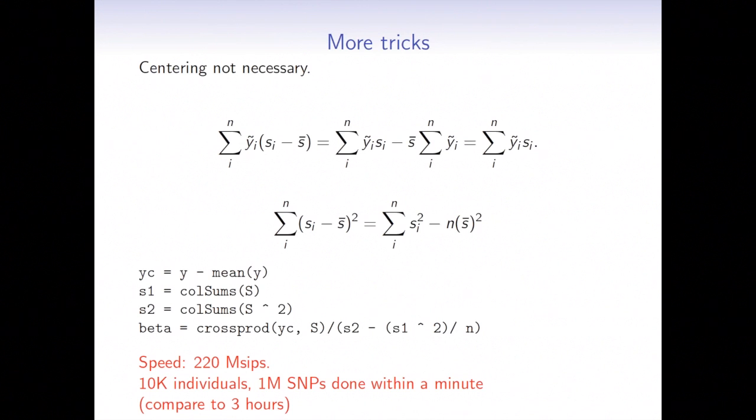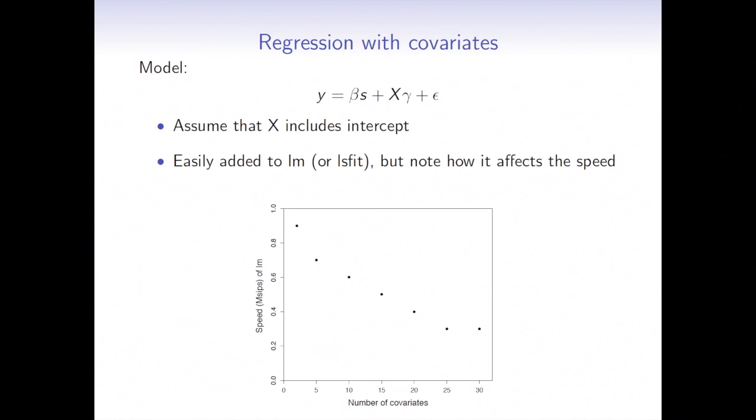And the speed was 220 mega-sips. And now that means that for 10,000 individuals, 1 million of SNPs, I would need only a minute to do such GWAS. And now compare it to the three hours that I mentioned on one of my first slides using a standard procedure. So the speed-up is enormous.